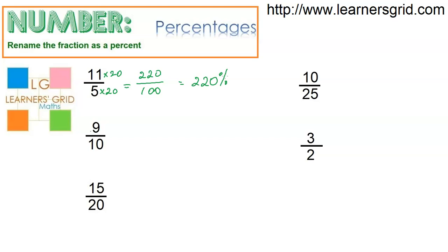Let's have a look at this one here. So again I need to make the denominator 100, so 100 divided by 10 is 10, so I multiply by 10, do the same to the top, I get 90 over 100 which is 90 percent.